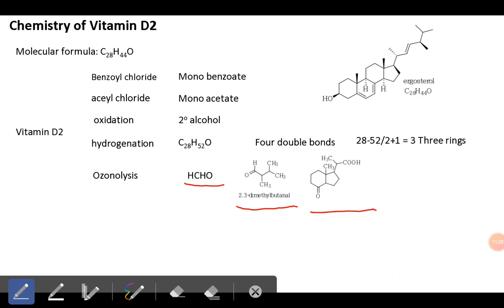Upon ozonolysis degradation, vitamin D2 gave formaldehyde, 2,3-dimethylbutanol, and a ketone whose structure was elucidated. This fragment, formaldehyde, and the five-membered cyclopentane ring indicated that vitamin D2 possesses structural features similar to ergosterol. The side chain product matches ergosterol, indicating the possibility of this side chain and a couple of rings in the structure of vitamin D2.